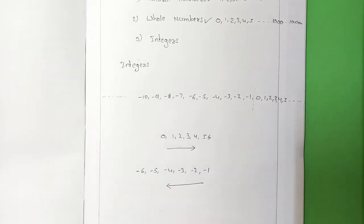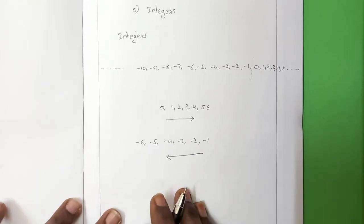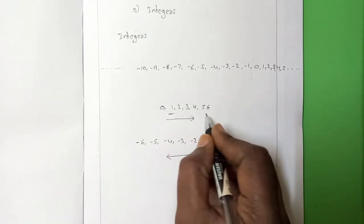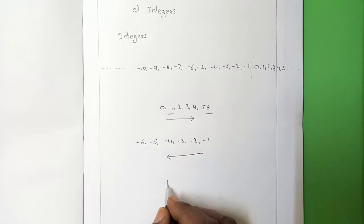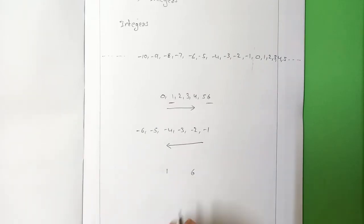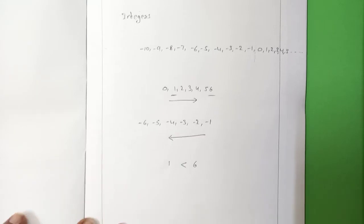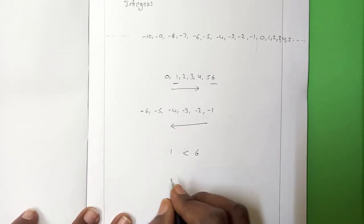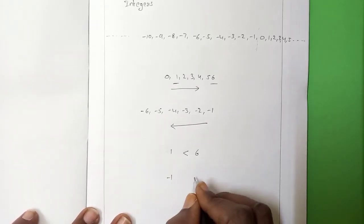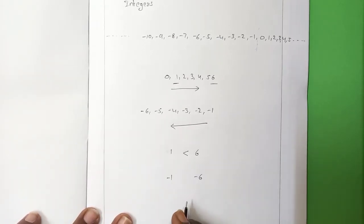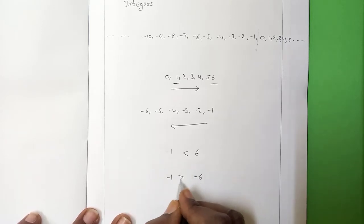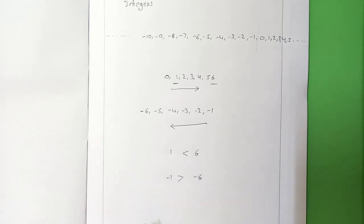Why? Just because — which is the bigger number, 1 or 6? Obviously 6 is the greatest number. When it comes to integers, if we take minus 1 and minus 6 — which is the greatest number here? Minus 1 is the greatest number.